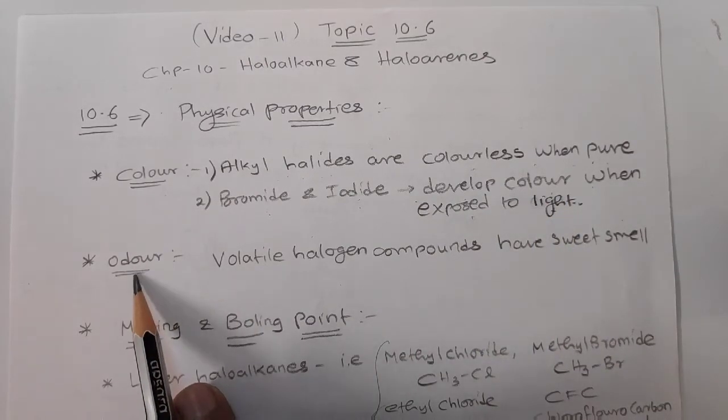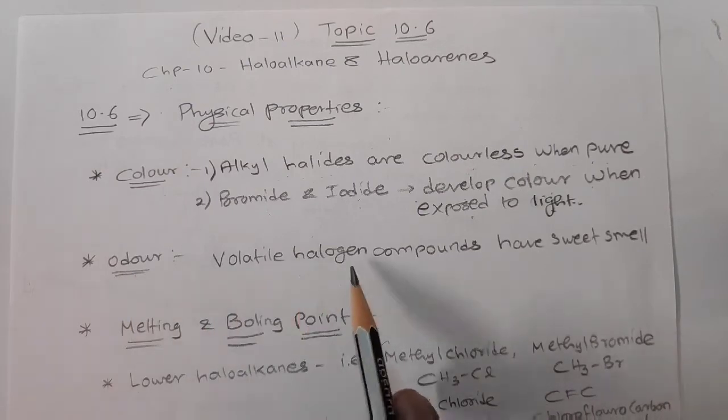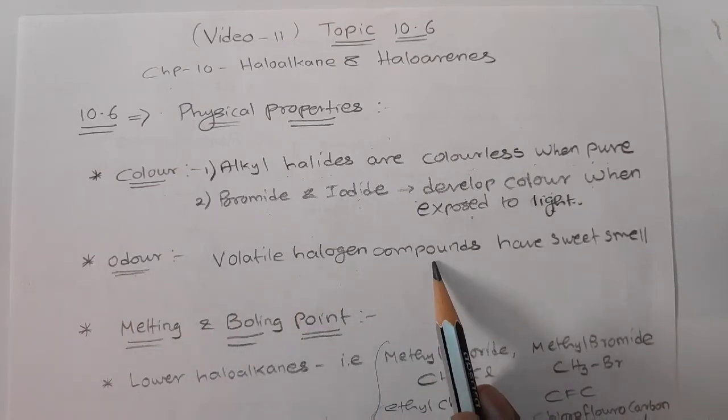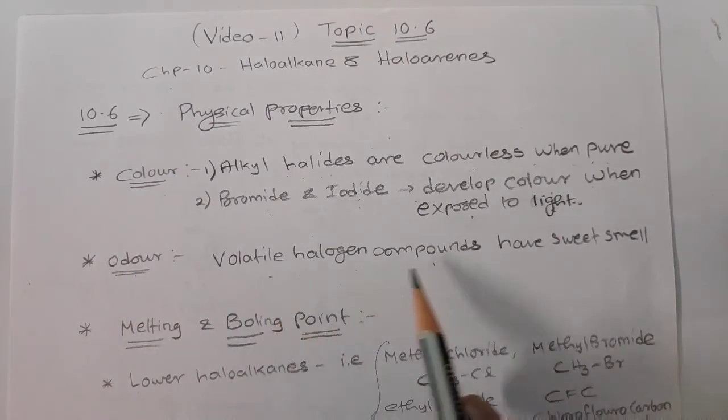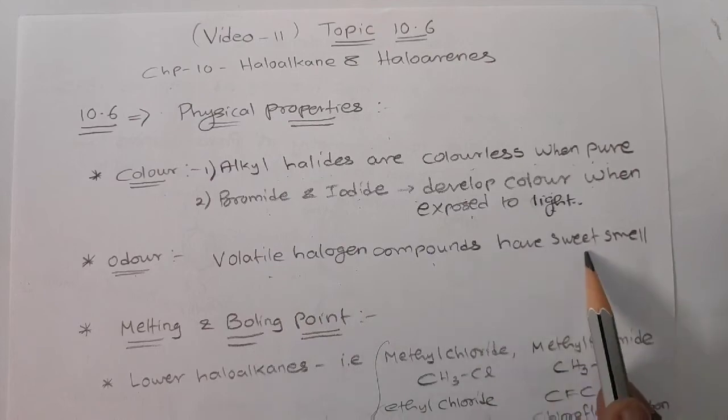Regarding odor, volatile halogen compounds — volatile meaning they evaporate at room temperature — have a sweet smell.